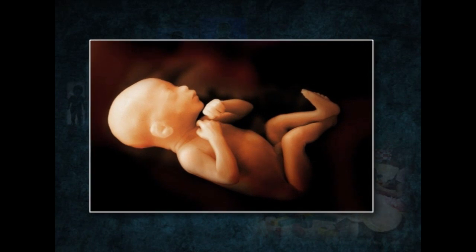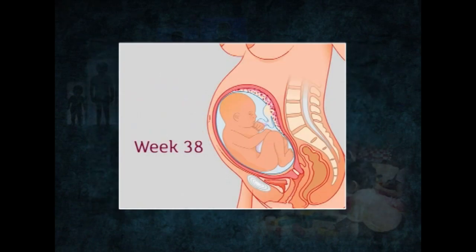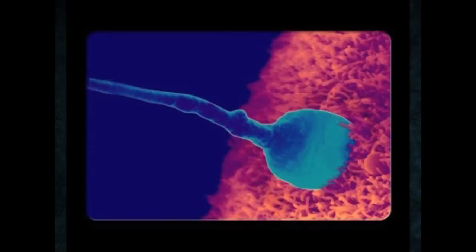Prenatal development is a process by which a baby develops inside the mother's womb. Prenatal development takes about 38 weeks to complete. During this time a single cell becomes a full term baby. Conception occurs when a single sperm cell from the male unites with an egg in the female's fallopian tube, which is called fertilization. The prenatal development lasts approximately 266 days, beginning with fertilization and ending with birth.